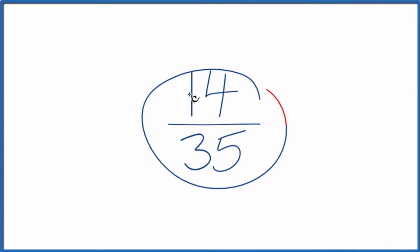Let's simplify the fraction 14 35ths. And what we want to do is find another fraction that's equivalent, has the same value as 14 over 35, it's just in lowest terms.